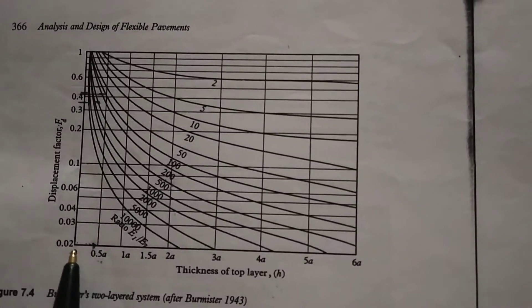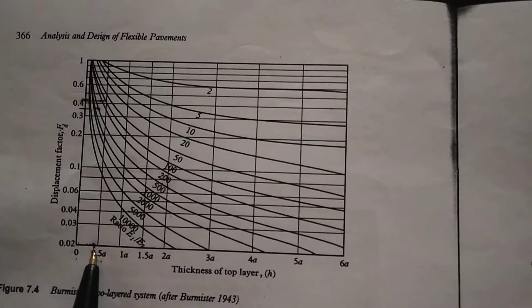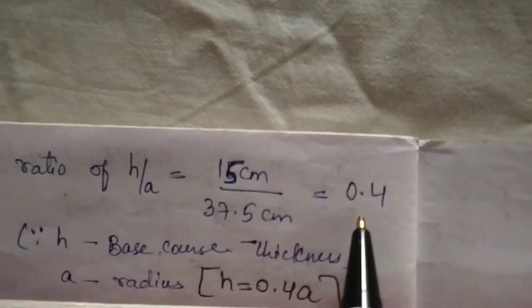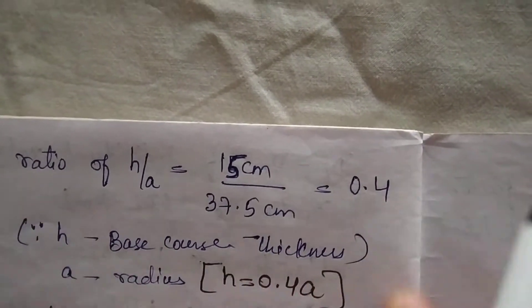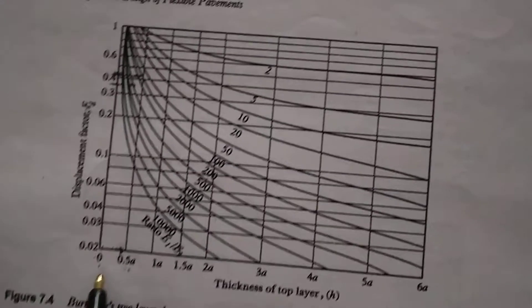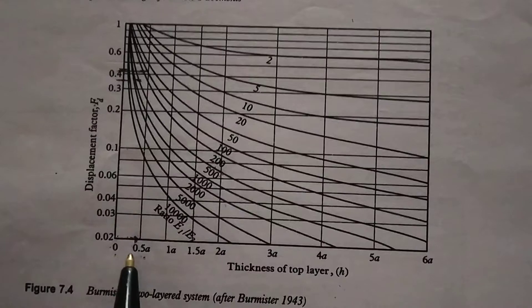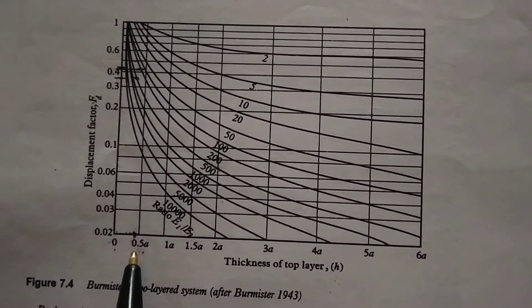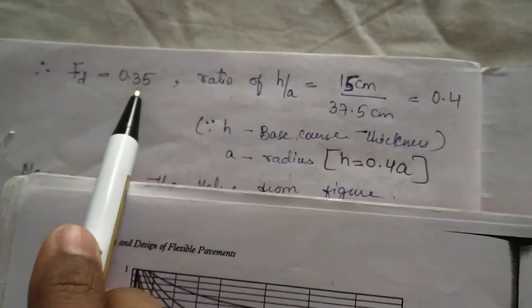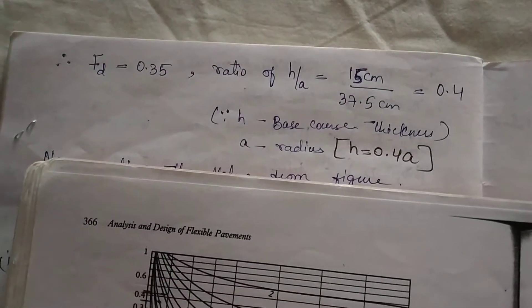H by A ratio is 0.4, it will come around here somewhere before 0.5. H is equal to 0.4 A, here this value will come around here before 0.5 A. And Ft I have as 0.35, here I will see for 0.35, it will come around here.